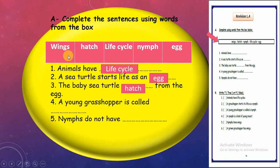Number 4: Young grasshopper is called what? Nymph or wings? Young grasshopper: nymph. Excellent! Means grasshopper small without wings. Number 5: Nymphs don't have wings. Excellent!